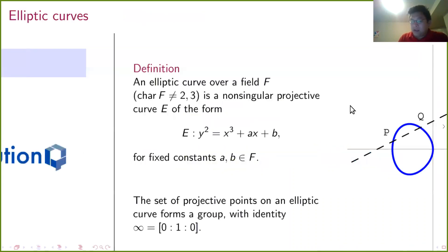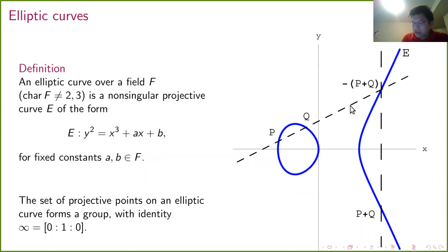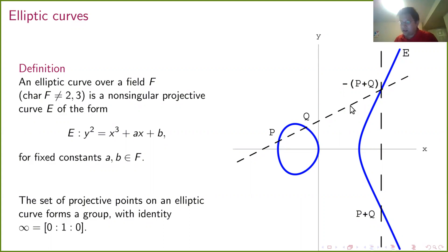Elliptic curves — probably most people here know what they are, but just to fix our notation: E is the curve, F is the field over which E is defined. We have short Weierstrass equations for these curves. I'm using only fields of characteristic not two or three, so that we do indeed have short Weierstrass equations. I'll use the infinity symbol to denote the point at infinity, the identity element of the elliptic curve.